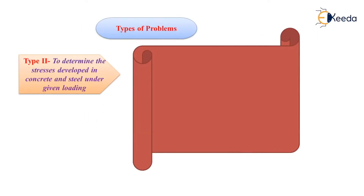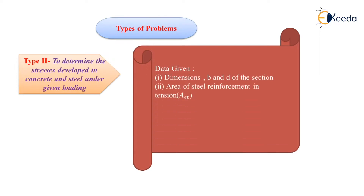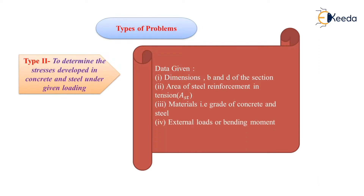In this type of problem, the given data is as follows: Number one, dimensions will be given in the form of width and depth of the section. Number two, they will give area of steel reinforcement in tension, that is AST. Number three, they will give the material grade, that is grade of concrete and grade of steel. Next, they will give external load or directly they will give bending moment.